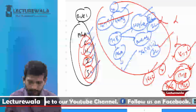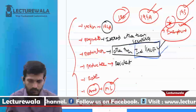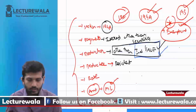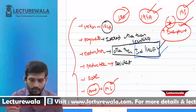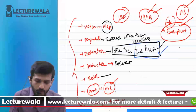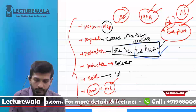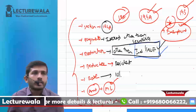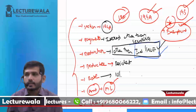So going back to our list for 194A: the deductee should be a resident — that is clear. Now, what should be the rate of TDS? Under 194A, the rate of TDS is 10%. You have to deduct 10% on whatever is your interest component.